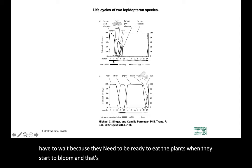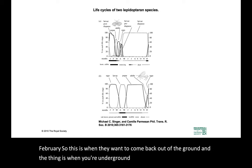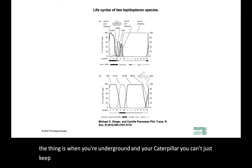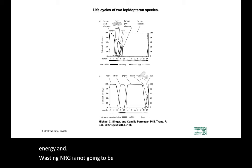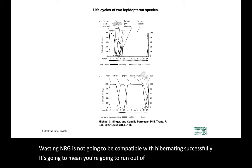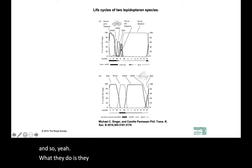They want to come back out of the ground in December, January, and February. When you're underground and you're a caterpillar, you can't just keep crawling back up to the surface because you'll waste energy — wasting energy is not compatible with hibernating successfully. What they do is they sense temperature down there, and of course the temperature on the Earth is warmer now.